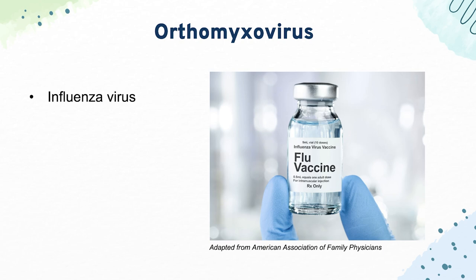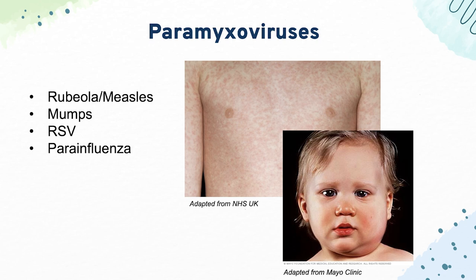For the paramyxoviruses, starting with rubeola and measles — that causes the four C's: cough, conjunctivitis, coryza, and Koplik spots. Those Koplik spots are little spots on the back of the palate. Then we have mumps, which causes parotitis, orchitis, and aseptic meningitis. RSV is known for causing a respiratory infection in kids through its F protein, which causes fusion of respiratory epithelial cells.